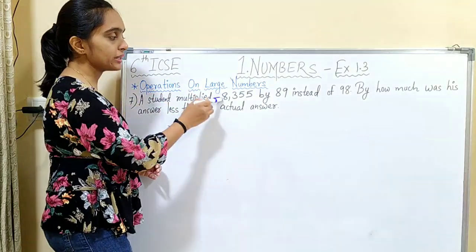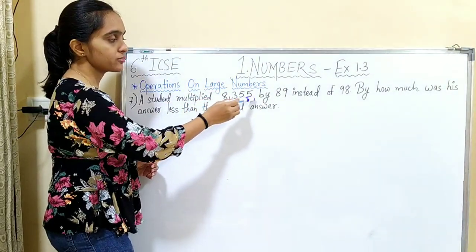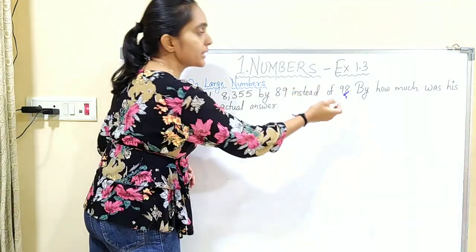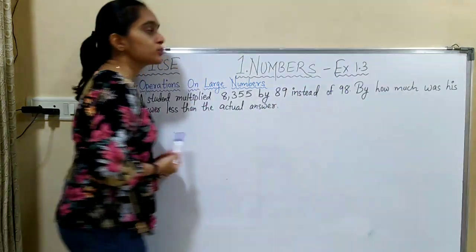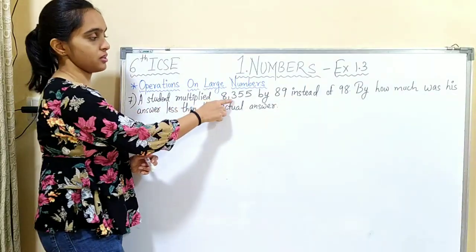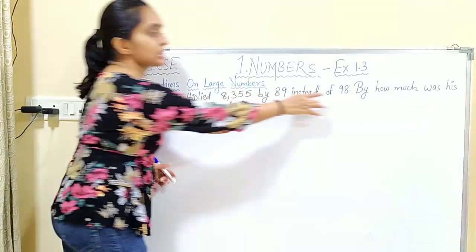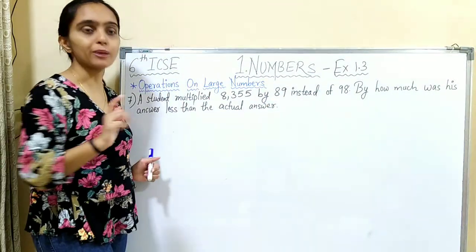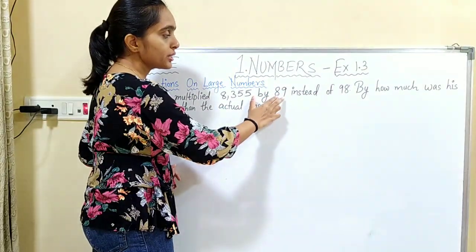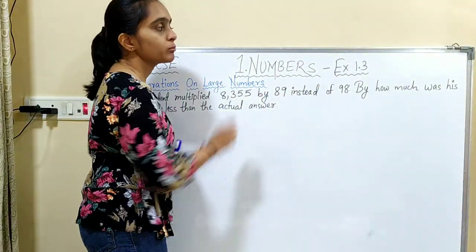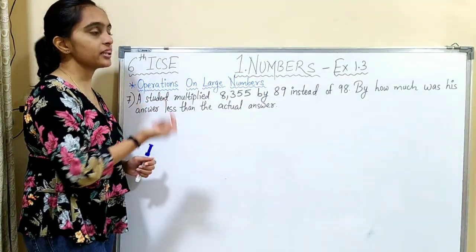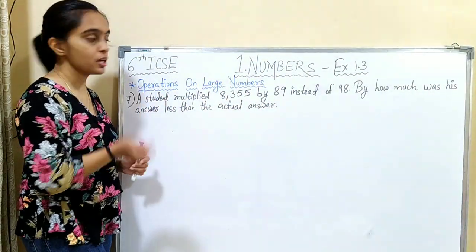The next question says: a student multiplied 8,355 by 89 instead of 98. We had to multiply the given number by 98, but by mistake the student multiplied it by 89. By how much was the answer less? Let's find the actual answer.